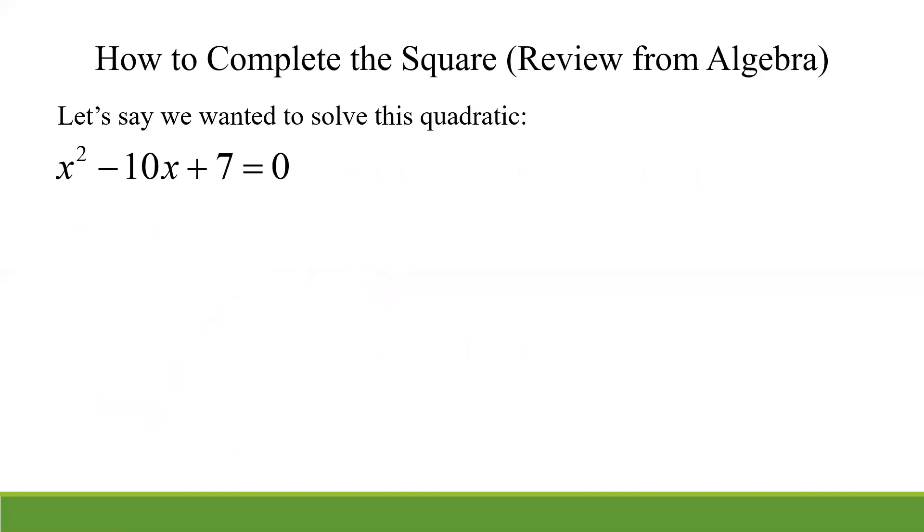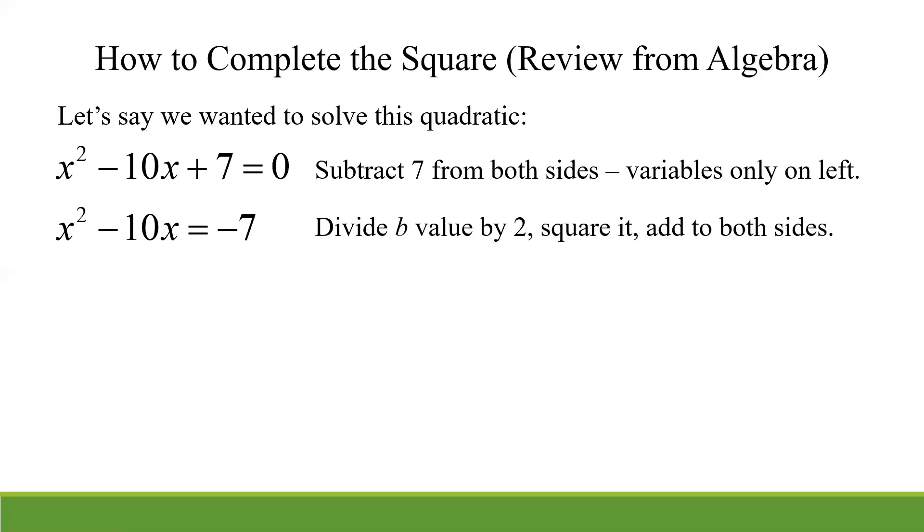Let's do one more example. In fact, if you want to go and pause the video and just see if you can remember that process on your own for this quadratic, see if you can get that in that form to where it's a squared thing equal to a number. So remember, what we do first is the variable by itself. So I'm going to subtract 7 from both sides. Divide that b value. What's my b value in this case? Well, in this case, it's negative 10. So I'm going to divide that by 2 squared and then add it to both sides. So if you divide negative 10 by 2, you got negative 5. So I'm going to add that negative 5 squared to both sides. The sign is important.